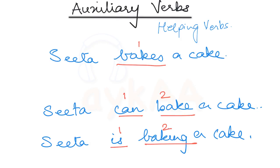Now whenever we have only one verb, that is the main verb. But when we have two verbs, then the first verb is the auxiliary verb or the helping verb and the second verb is the main verb.